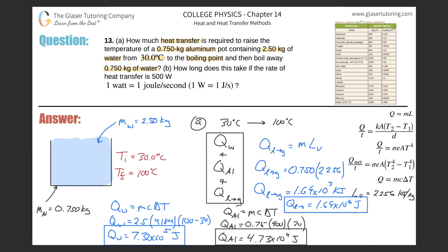Now I just add the three parts together. Adding Q_water, Q_aluminum, and Q_vaporization using the exact values gives a total of 2.47 times 10 to the sixth joules. That's about 2.5 million joules of heat energy gained by the system.